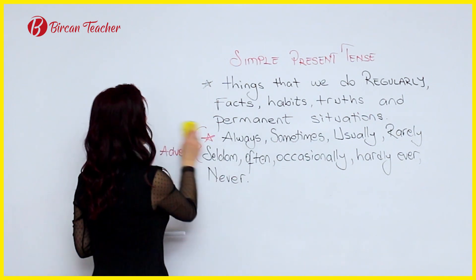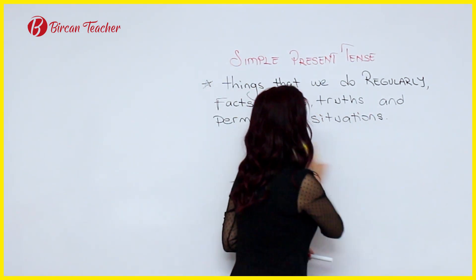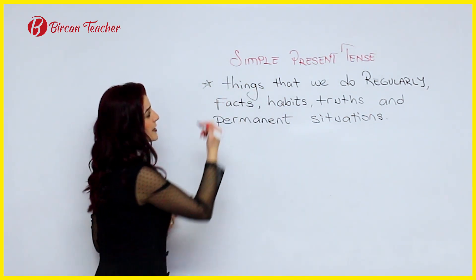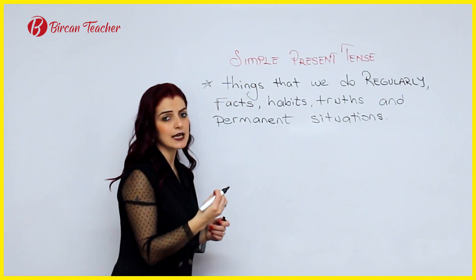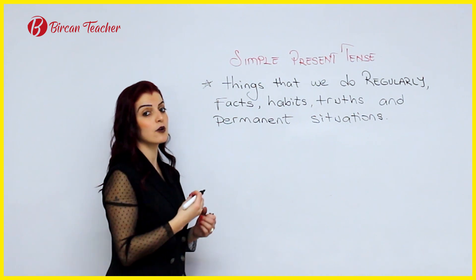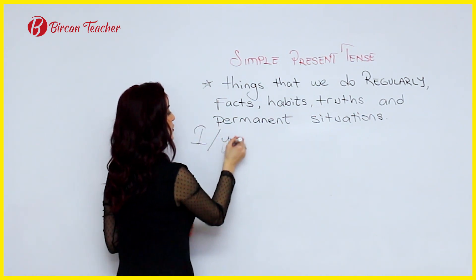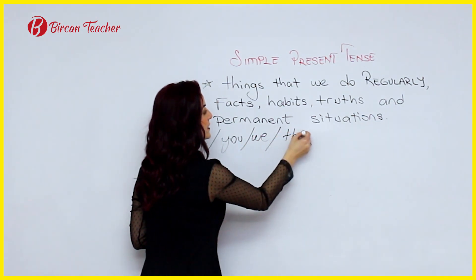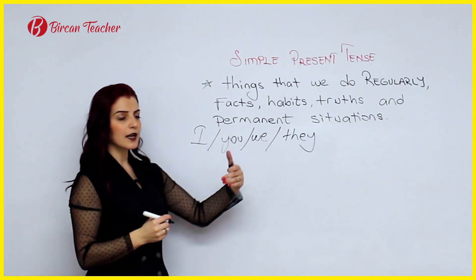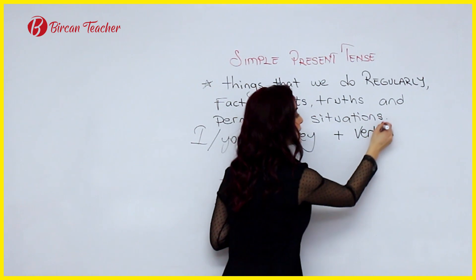Let's see some examples about simple present tense, because the rules are important — simple present tense is a very easy and very common tense in English, and that's why we should learn it correctly. For I, you, we, and they subjects, we always use the verb's present form.